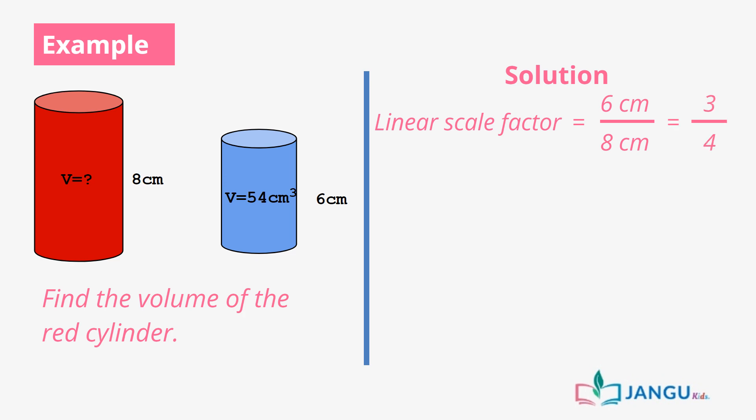Next, we write the equation to be 3 over 4 cubed equal to 54 over v, where v is the unknown volume. We cross-multiply the equation, which gives us 27v over 27 equals to 64 times 54 over 27. Therefore, v is equal to 128 cubic centimeters.